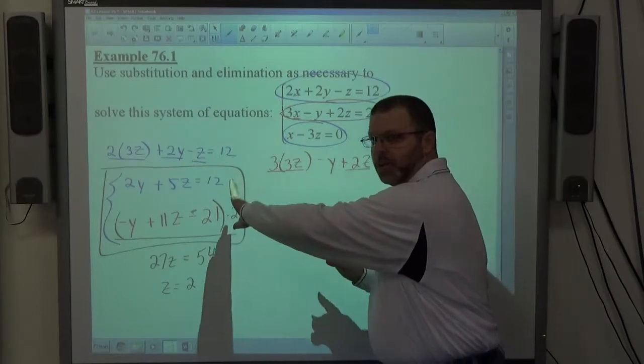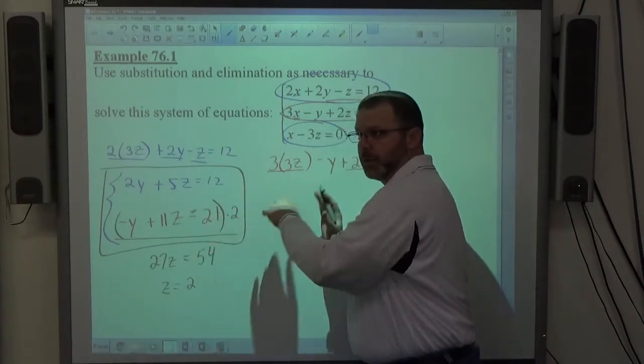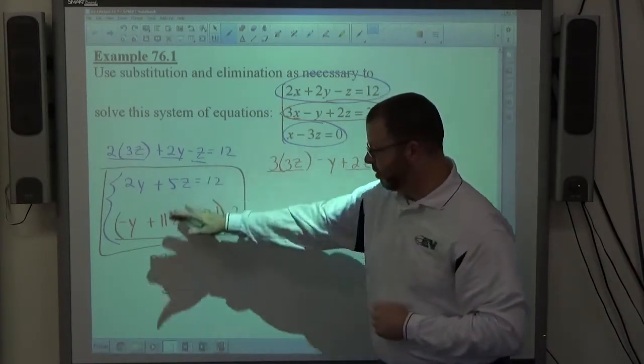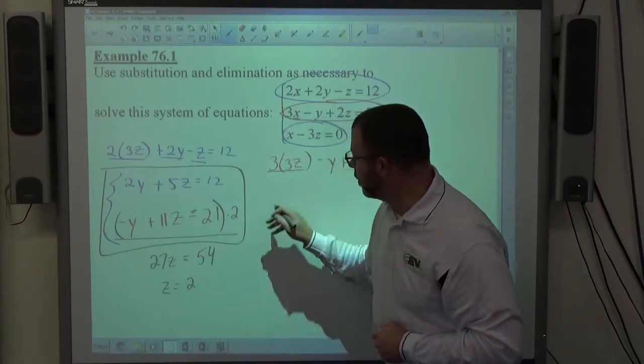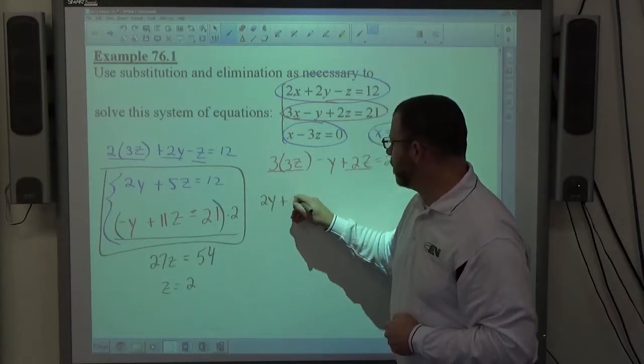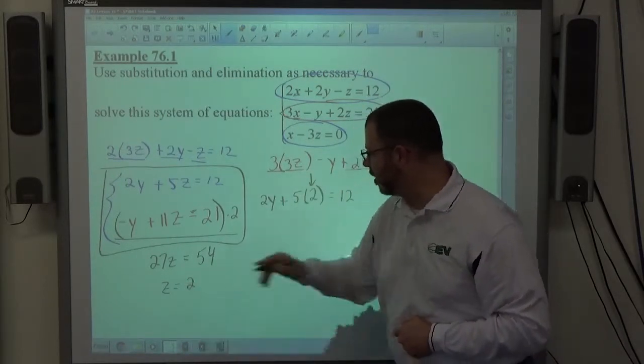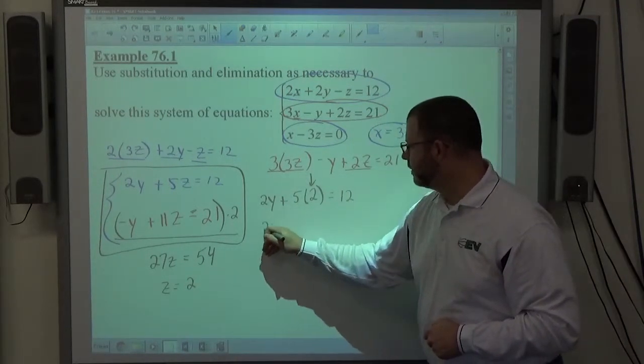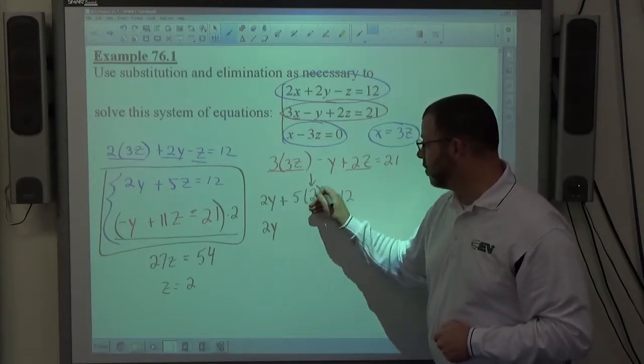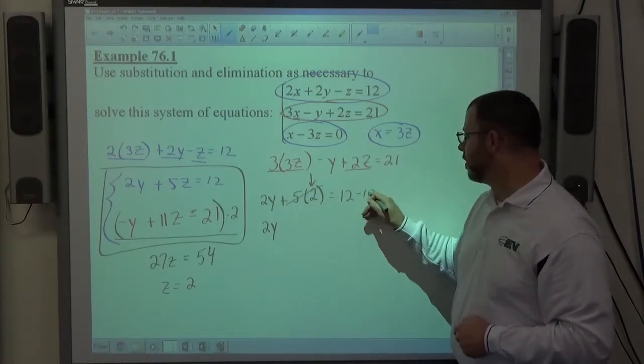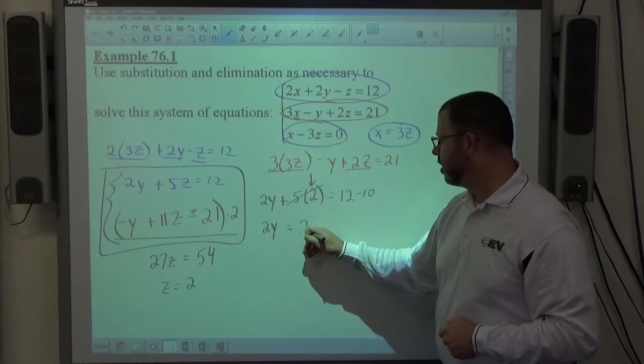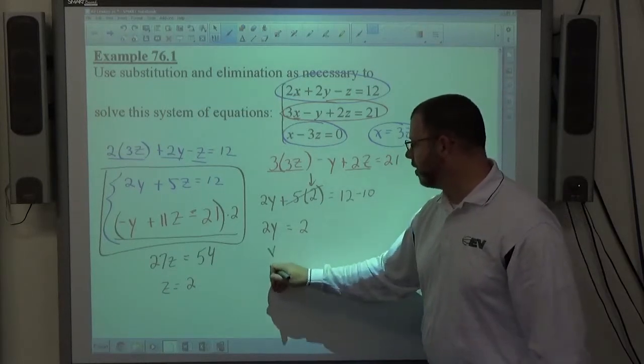Right now, I've got X out of the picture because I substituted. So, if I'm just working this alone and pretending this doesn't exist, just find Y and Z. So, if I go to the blue equation, 2Y plus 5Z is equal to 12. I just change Z into a 2 because that's what Z equals. 5 times 2 is 10. Moves to this side becomes minus 10. 2Y equals 2. Therefore, Y is equal to 1.